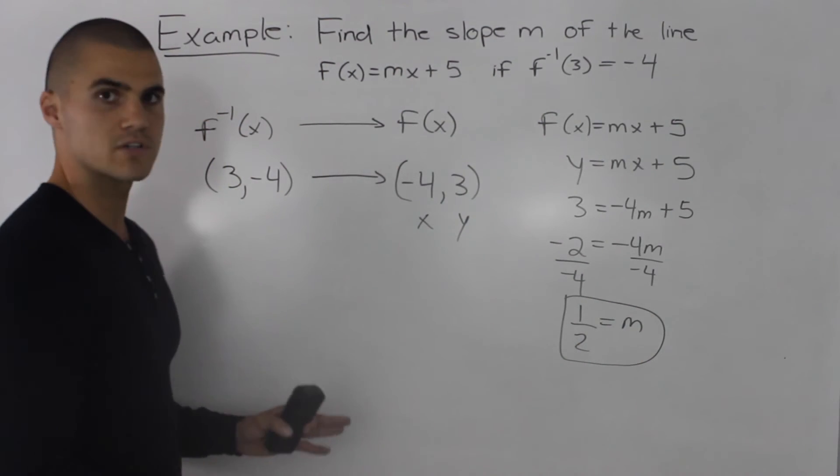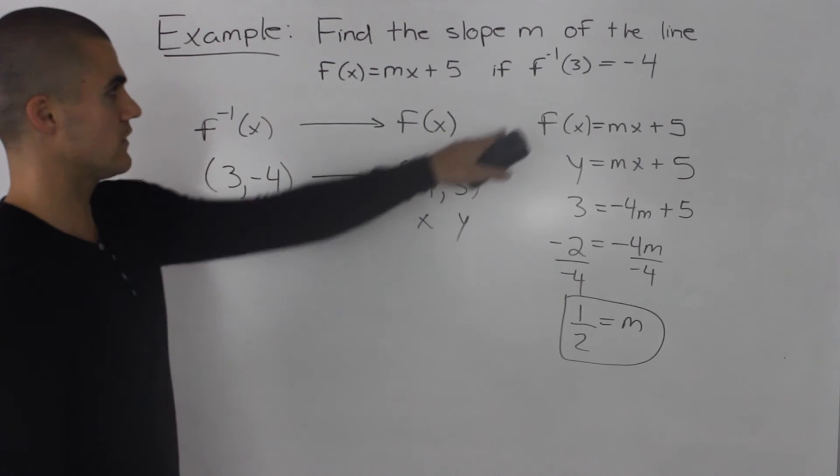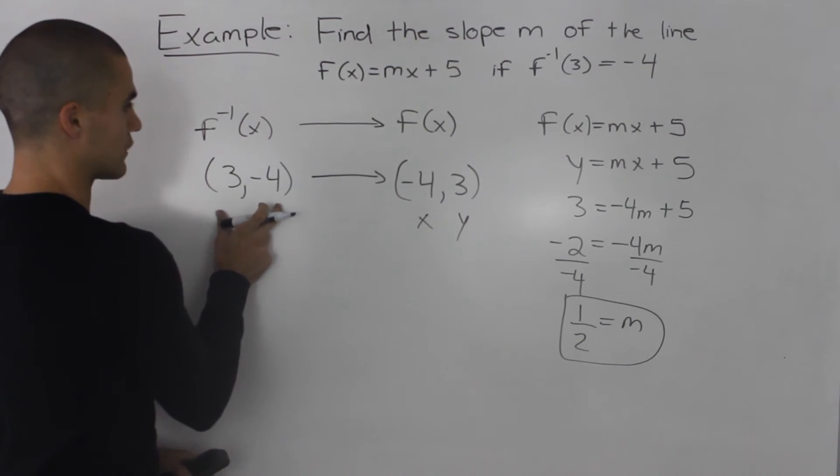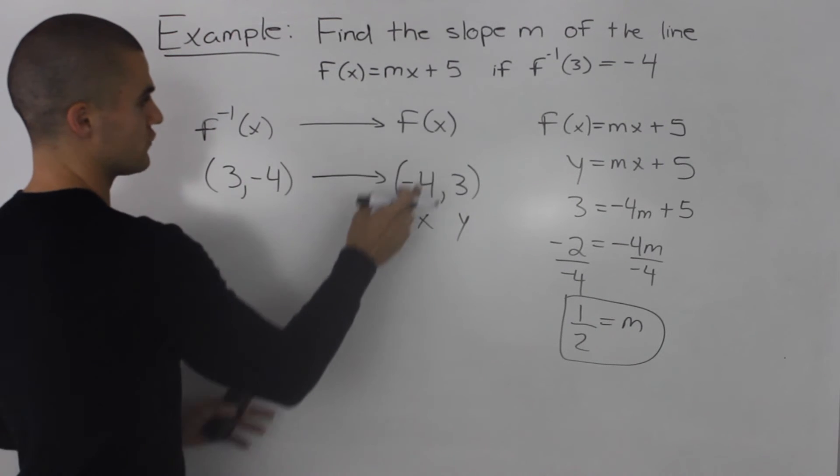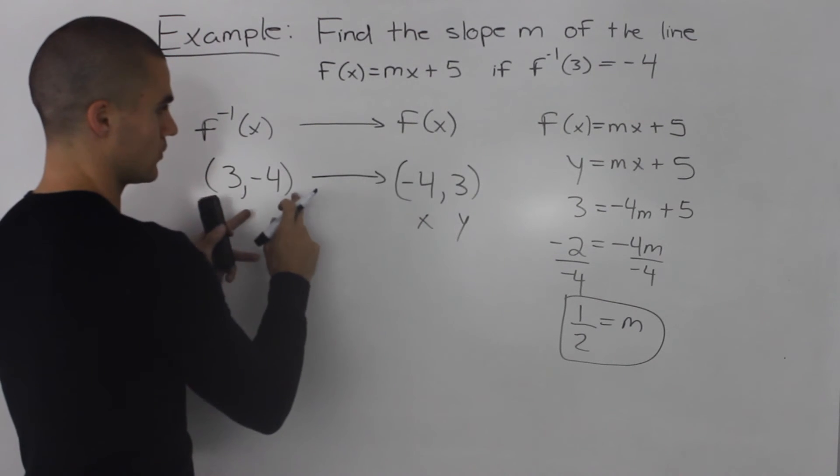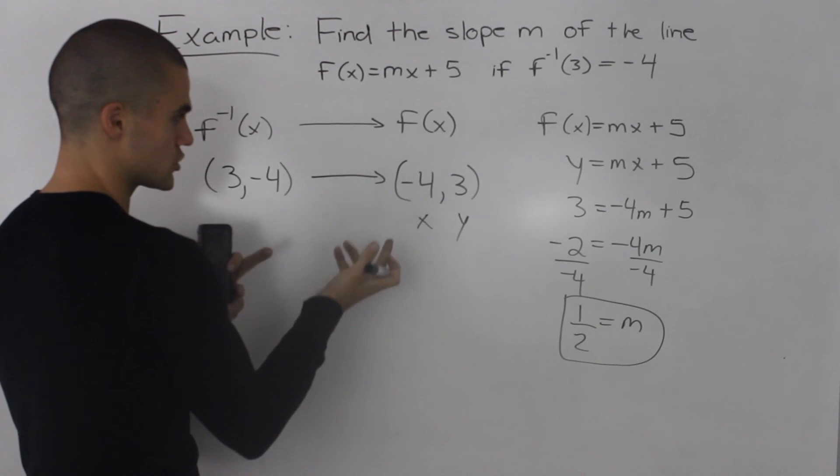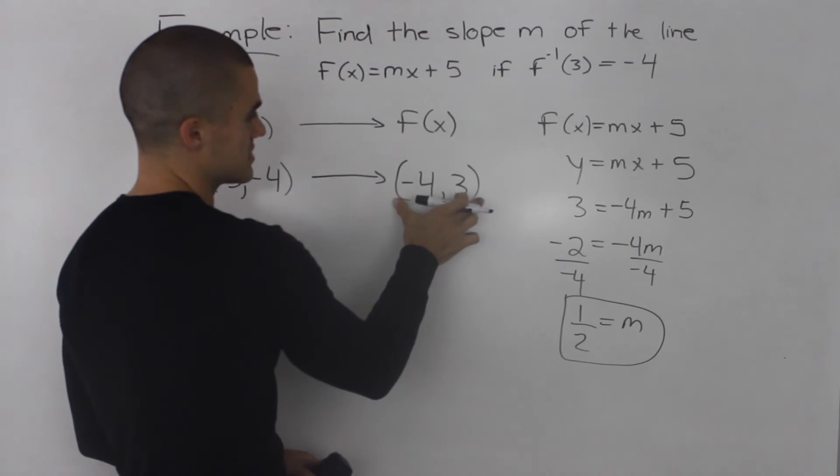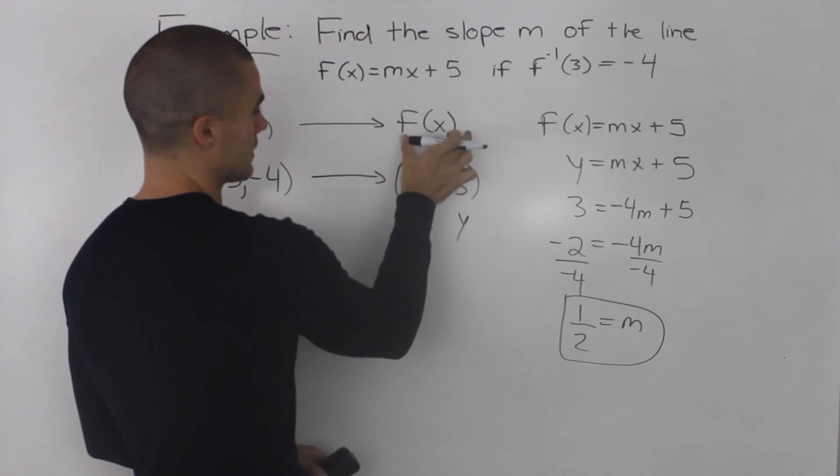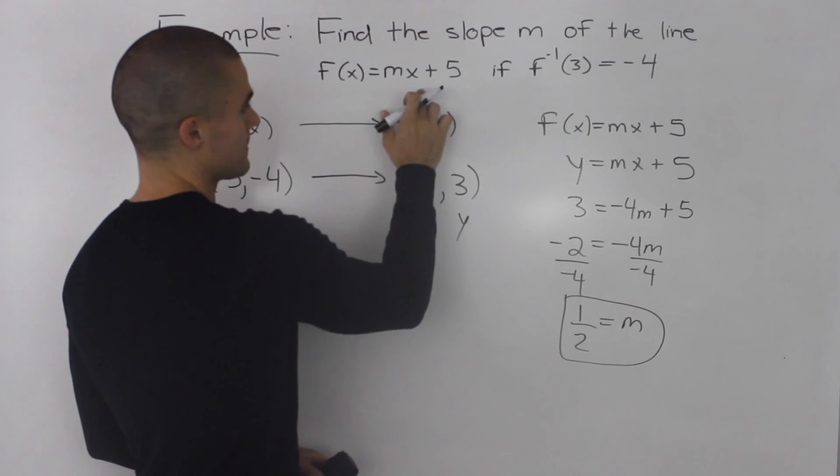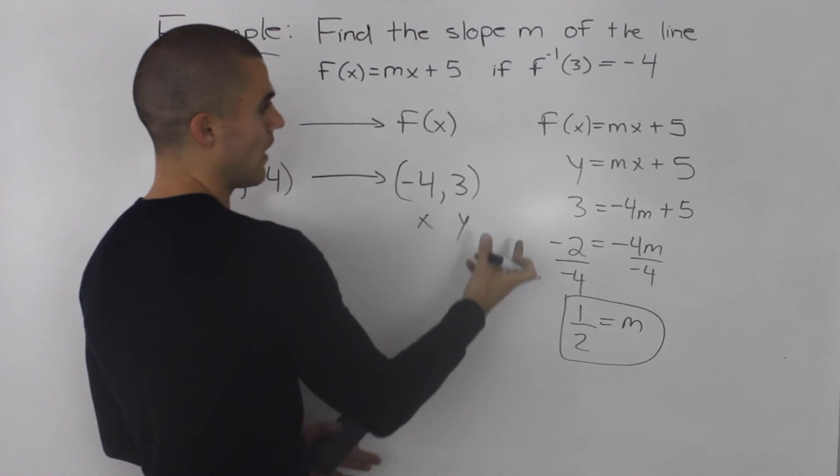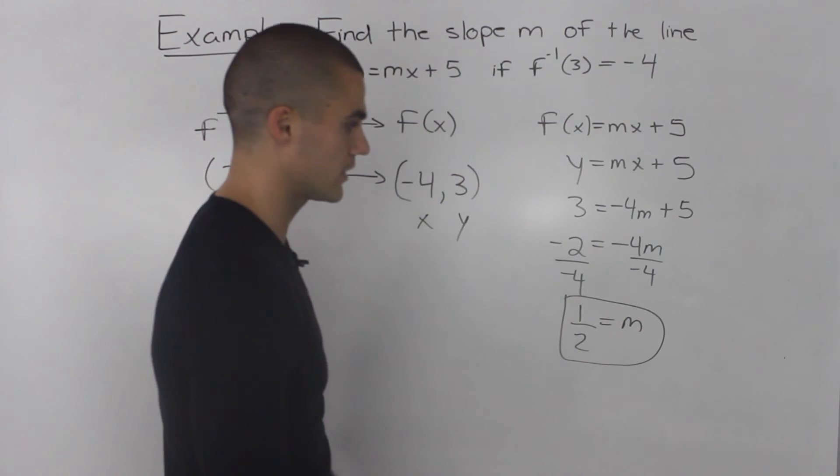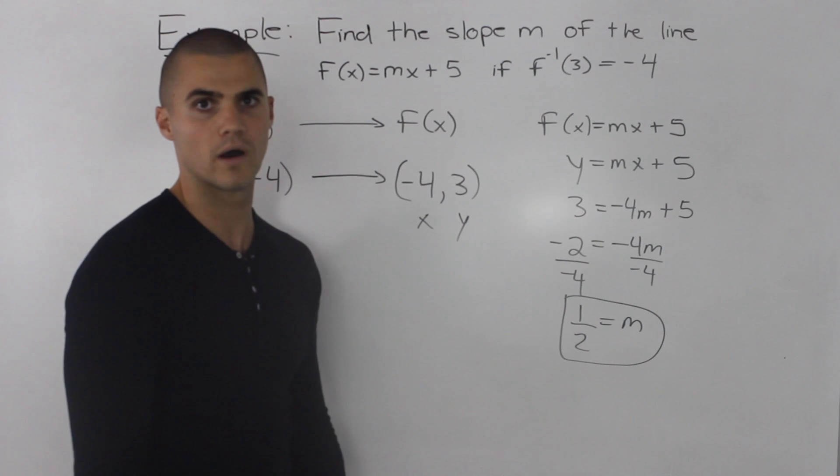Okay, so one more time as a recap, we were given the points on the inverse, so this (3, -4). So on the original function, the corresponding point would be the x and y values interchanged, so it would be (-4, 3). And then we can use this point on the function f(x), we could plug in the x and y values and then solve for m. So then doing that, we solved for m and we got a slope of 1/2.